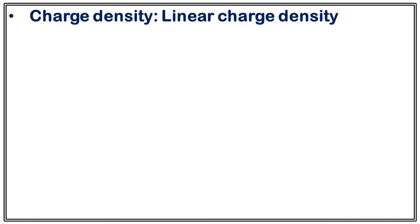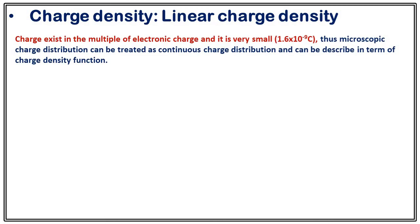As charge exists in multiples of the electronic charge, and the electronic charge is very small — 1.6 × 10⁻¹⁹ coulombs — for any macroscopic body such as a rod, plate, or sphere, we can consider it as a continuous charge distribution. In such a scenario, we describe that body in terms of a charge density function. There are three different kinds of charge density functions.